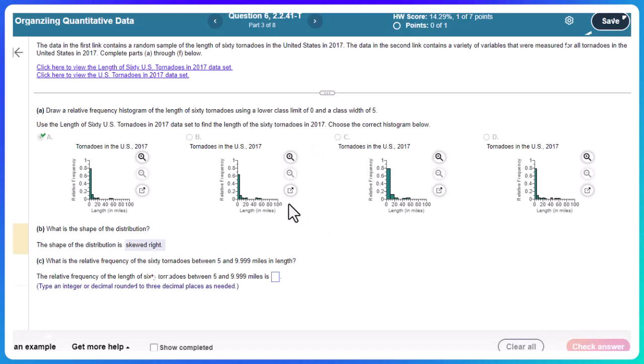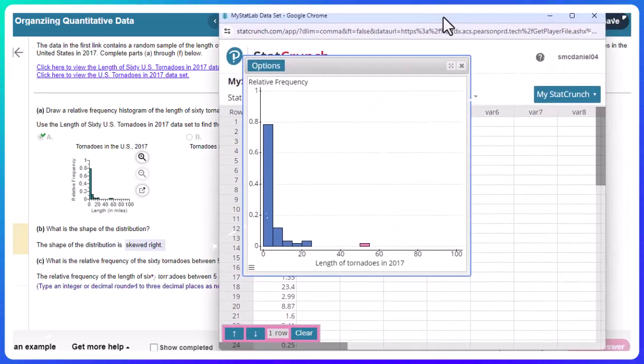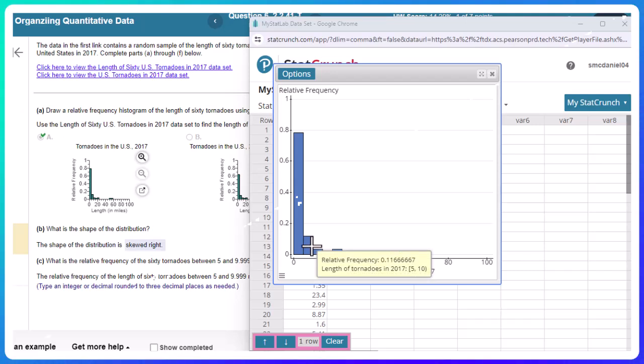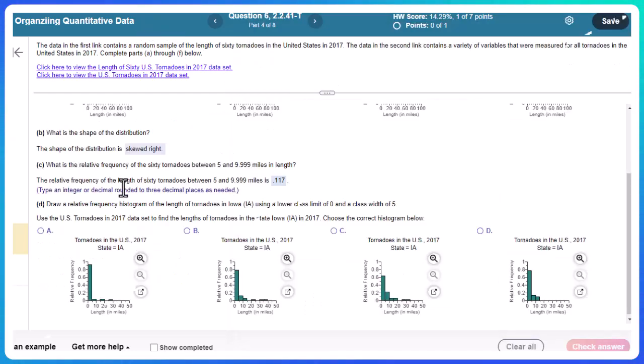What is the relative frequency of the 60 tornadoes between five and 9.999 miles in length? Type an integer decimal rounded to three places as needed. So let's pull this back in. And as that crunch, I can hover over that bin. So this first, the second bin is the one I want. And notice that's from five. And then notice that, and remember in algebra, the parentheses on the right means that we don't include the 10. So it goes up to 9.999. And so that relative frequency is 0.117 if I'm doing three decimal places, 0.117.